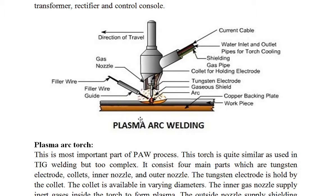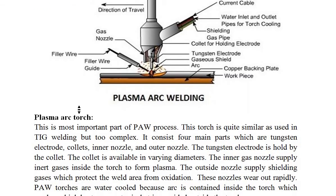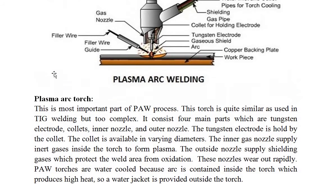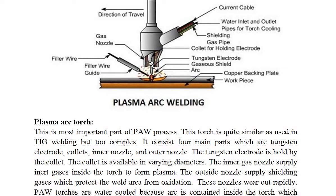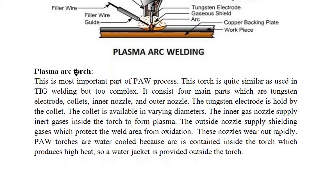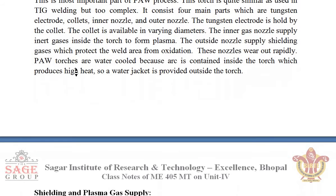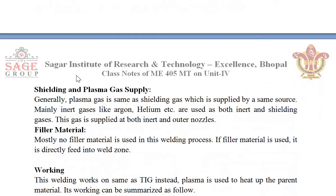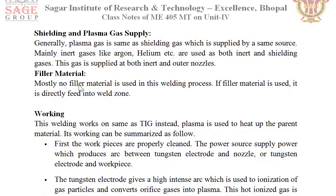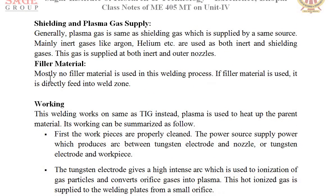This is all about the plasma arc welding setup. Looking at the working diagram of plasma arc welding, we have a plasma arc torch which projects a beam. We also have a shield gas and plasma gas supply, and a filler material which is used to fill or join the parts being welded.